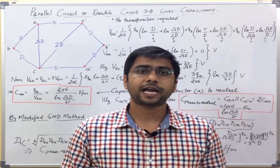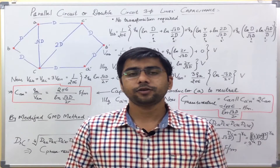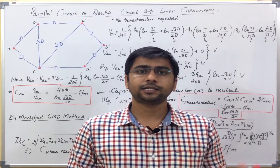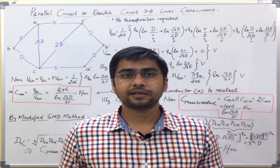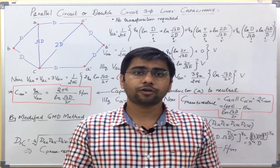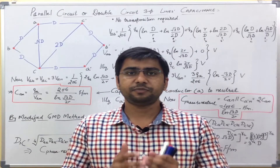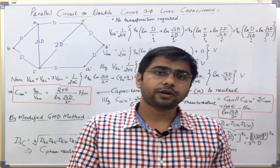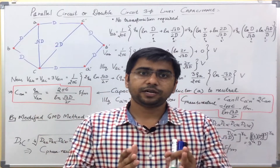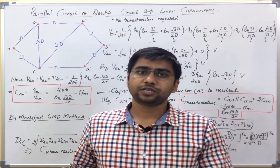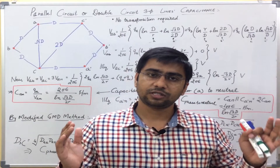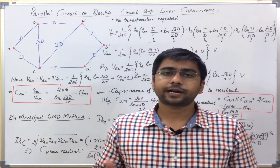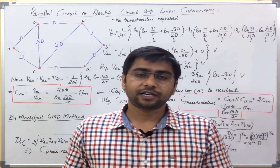Today, in this lecture, we will derive the capacitance of a double circuit line or parallel circuit line. As I already told while we were discussing the inductance of a transmission line, why we use double circuit lines or parallel circuit lines — they have a lot of benefits. In this similar right of way, we can transmit more power by using the same tower, rather double power, by using those same towers and similar space if the tower is designed properly. So a double circuit line helps in the transmission of more power.